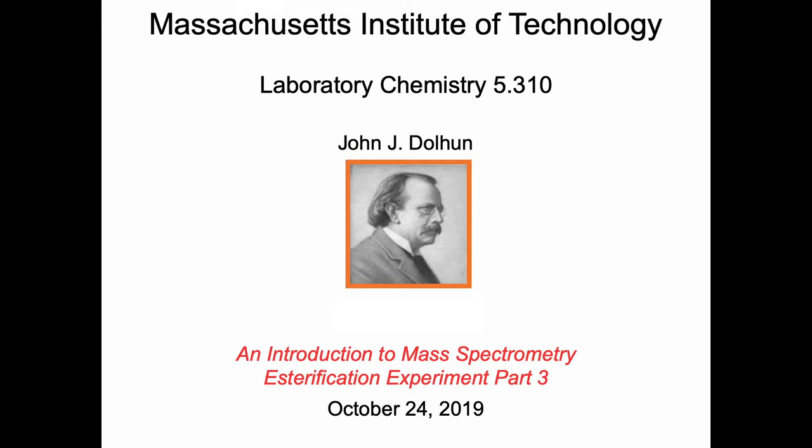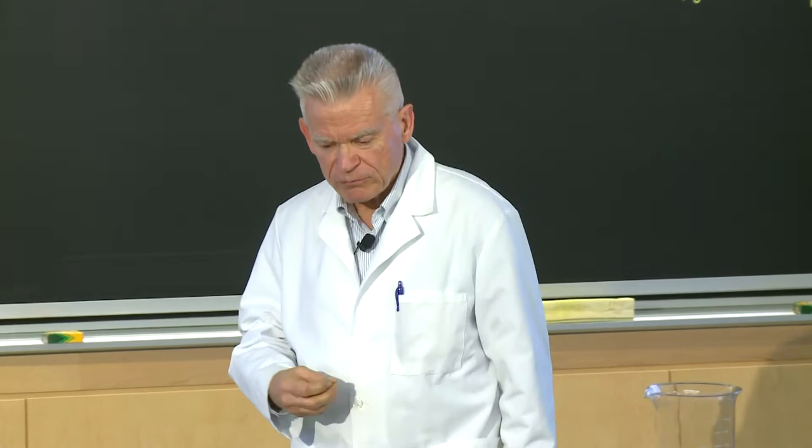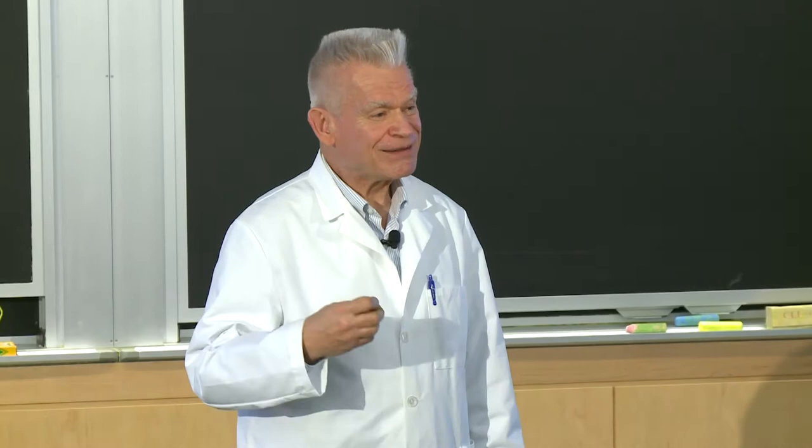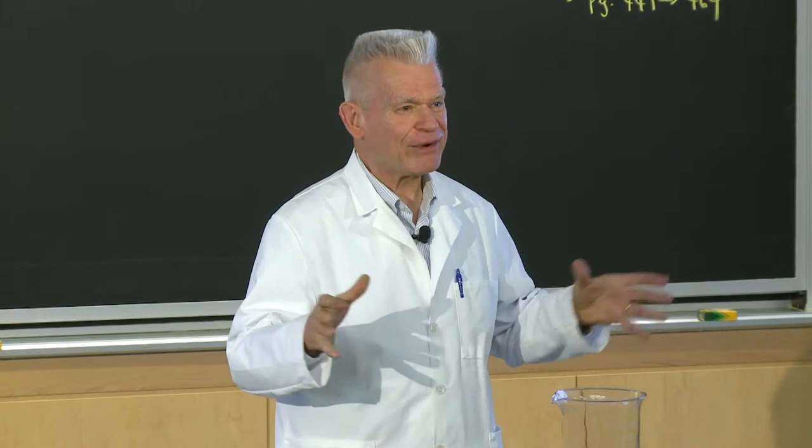So today I'm going to talk about mass spectrometry. JJ Thompson, discoverer of the electron, won the Nobel Prize in 1906 in physics, but not for the discovery of the electron, for the conduction of electricity through various gases and discharge tubes. After he won that Nobel Prize, seven members of his research group won Nobel Prizes. In 1937, his son won a Nobel Prize for figuring out the wave-like properties of the electron that his father discovered. Nine Nobel Prizes in one research group. It's just amazing.